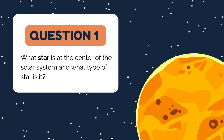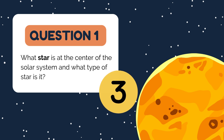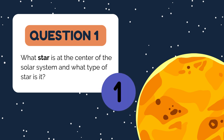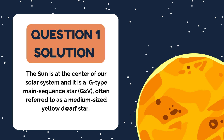Here's a fundamental one to warm you up. What star is at the center of our solar system, and what type of star is it? Of course, it's the sun. But did you know it's not just any star? The sun is classified as a G-type main sequence star, also known as G2V. It's often referred to as a medium-sized yellow dwarf, generating energy through nuclear fusion in its core.